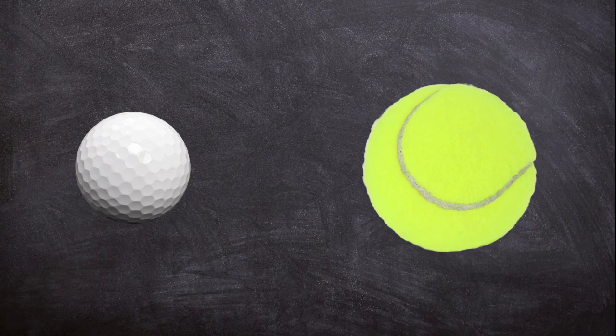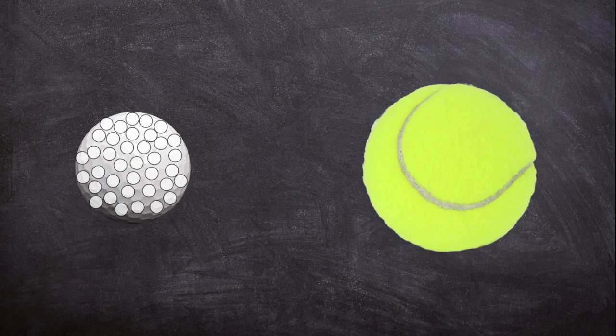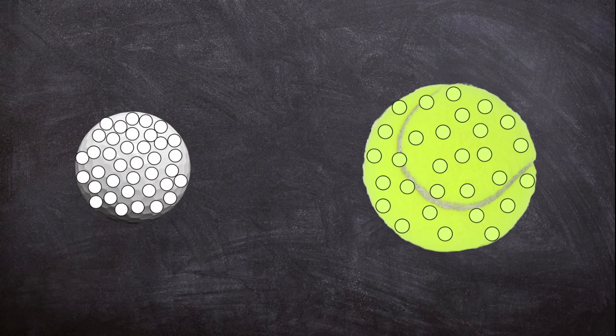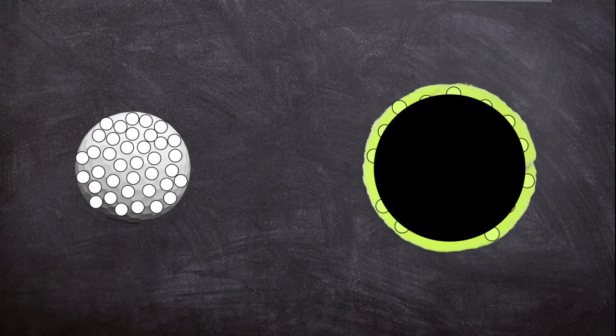A golf ball is more dense than a tennis ball. It has more stuff packed inside it. A tennis ball is hollow inside. It is full of air, which makes it less dense.